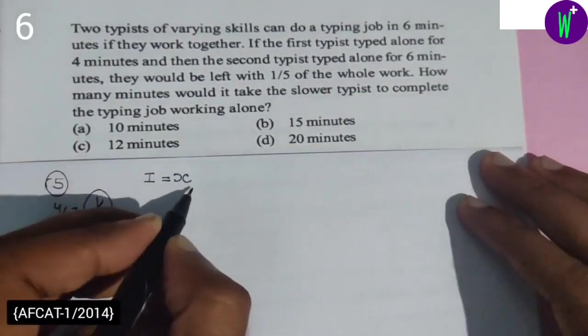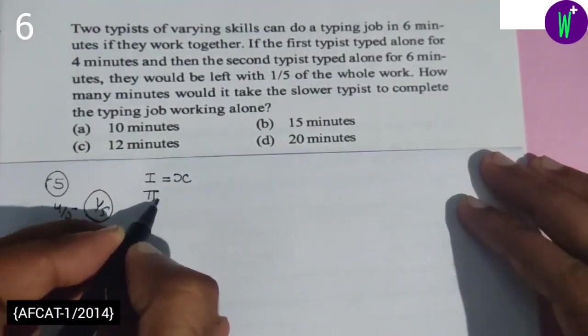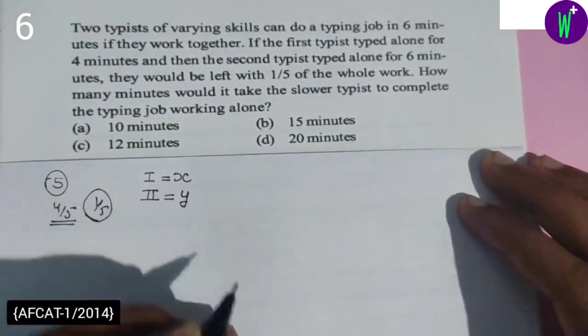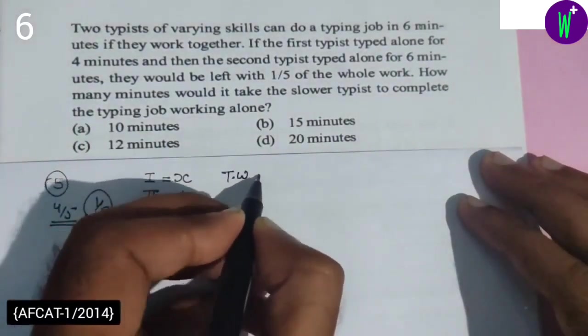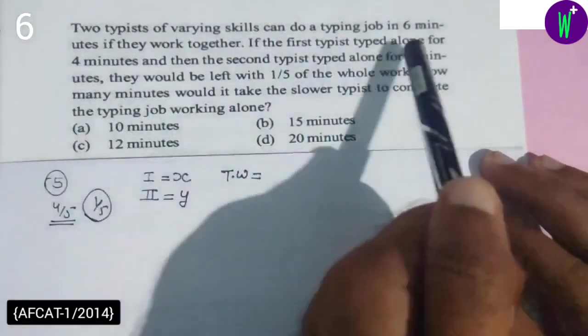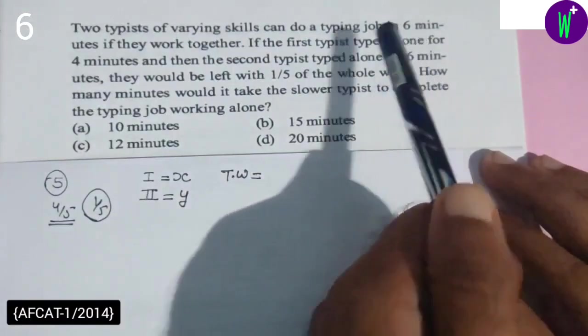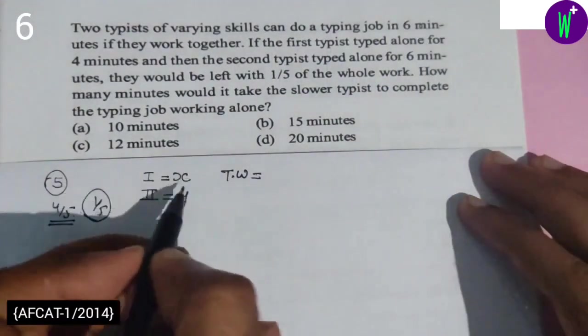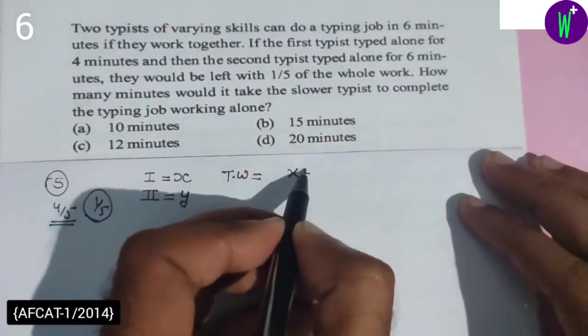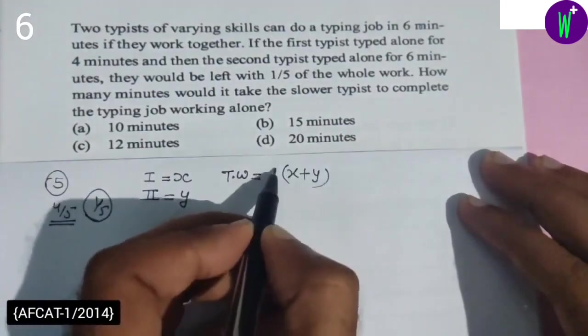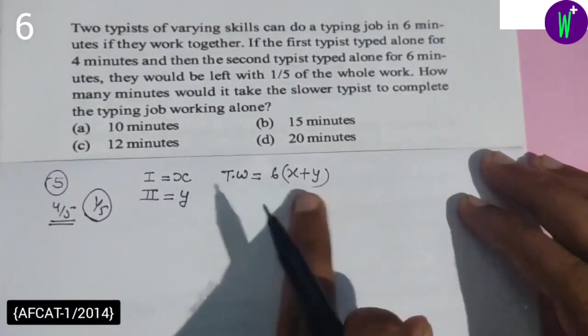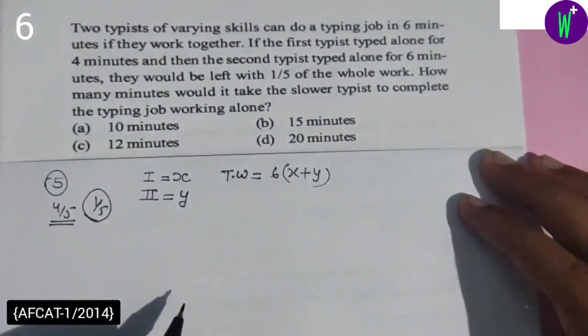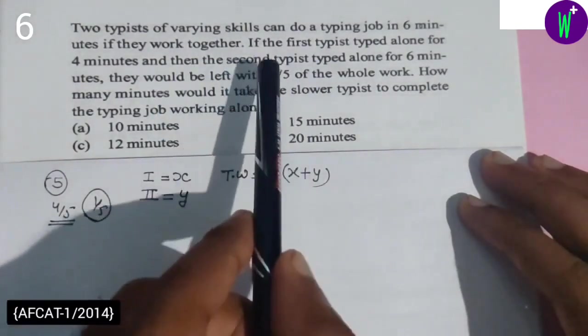The first typist can do x units of work per minute, the other typist is working with y units per minute. So the total work, when both work together, is completed in six minutes. The total work equals six times (x plus y).